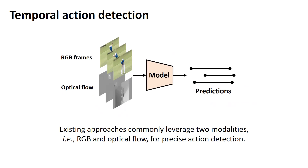To date, a variety of methodologies have been designed to tackle this challenging task and shown promising performance. For accurate action detection, most of them leverage two modalities as inputs: namely RGB frames and optical flow. It is well known that RGB frames provide appearance information while optical flow focuses on motion cues. Hence, they are complementary to each other, and employing both modalities helps to achieve good localization performance.